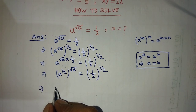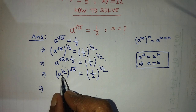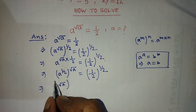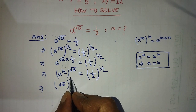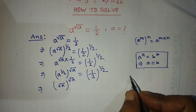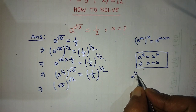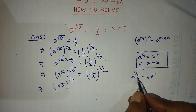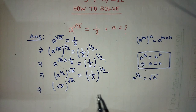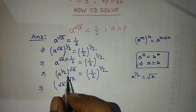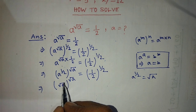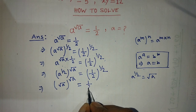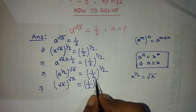On the left hand side, in the place of a to the power half, we have to write root over of a, and in the place of the power we write root over of a again. Since a to the power half is equal to root over of a, we can write root over of a in the place of a to the power half. On the right hand side, we again write 1 over 2 whole to the power half.